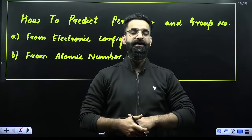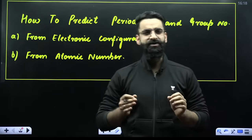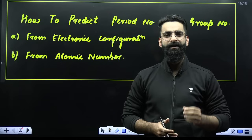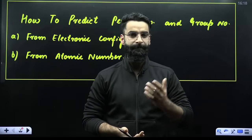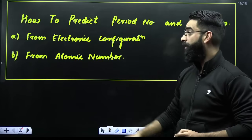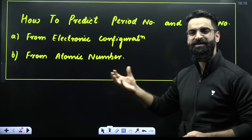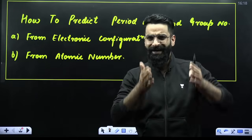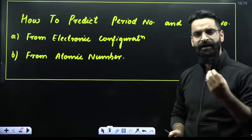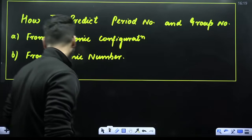Hey guys, good evening and welcome back again to your Anacademy in English channel. I hope all of you are doing great. So my dear students, this is going to be a very short and precise session in which I'm going to discuss an amazing topic with all of you — a topic which is basically a struggle for a lot of students. How to predict the period number and group number from the given electronic configuration or from the given atomic number? So let's get started without wasting any time.